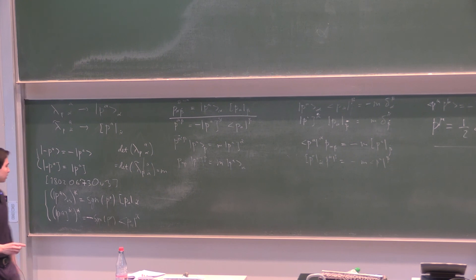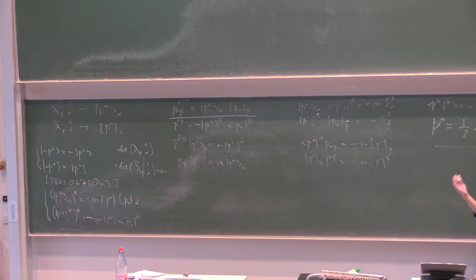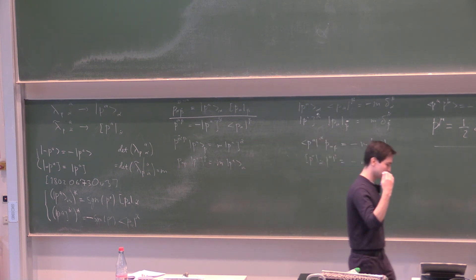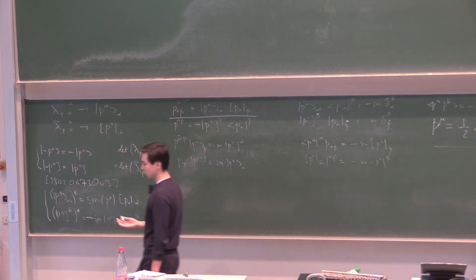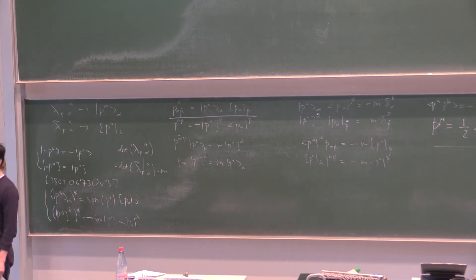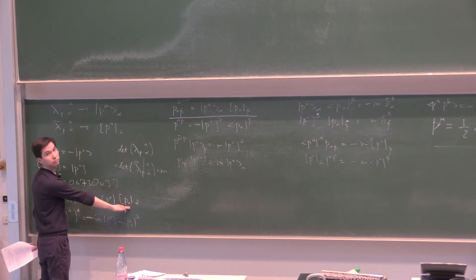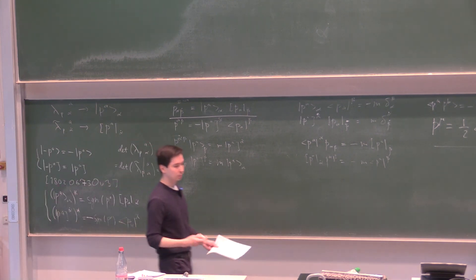One message here is that in the exercise I told you to show that lowering little group indices and raising them corresponds to inverted SU transformations, which is Hermitian conjugation. Therefore it's consistent — it's logical that conjugating little group indices puts them down. So there's consistency between this convention and the property of SU2.